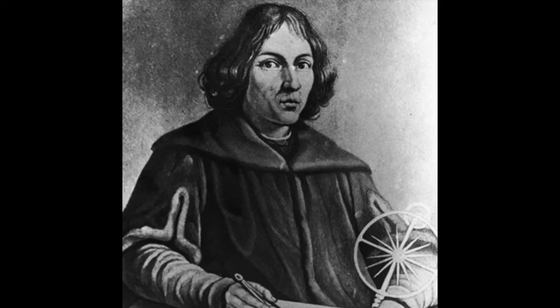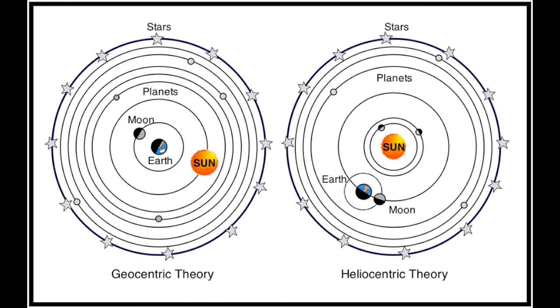Following Copernicus' revelation in 1543 that the Sun was at the center of the solar system and the Earth orbited it, many began to view the night sky in a dramatically different light. Astronomers began to wonder if the Earth was passing through clouds of dust on its yearly orbit around the Sun, causing the dust to burn up as it entered our atmosphere.